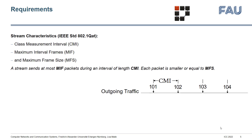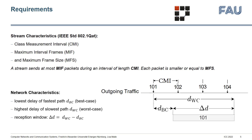To duplicate a stream and configure its duplication and elimination process properly, we need three main characteristics of the stream, which are defined in TSN. They are the class measurement interval (CMI), which is the interval of its periodic sending; the maximum interval frames (MIF), which are the number of packets sent per interval; and the max frame size (MFS), which indicates how large the packets are in the worst case. A stream sends at most MIF packets during an interval of length CMI, and each packet is smaller or equal to MFS.